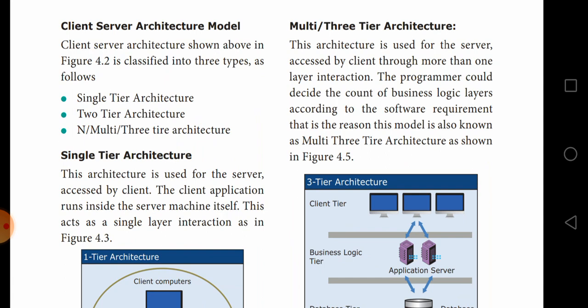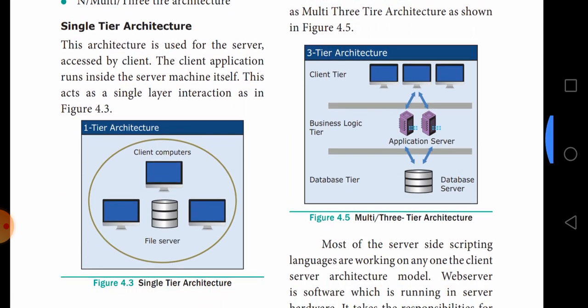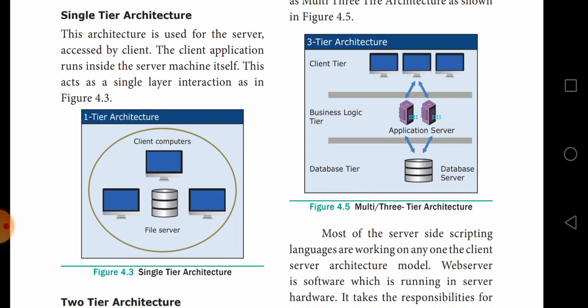Now we see the client-server architecture model. There are three types: single tier architecture, two tier architecture, and n-tier or multi-tier or three tier architecture. In single tier architecture, the client application runs inside the server machine itself. See the diagram — in that, client computers and file servers are there, and this architecture is used for a server accessed by a client.